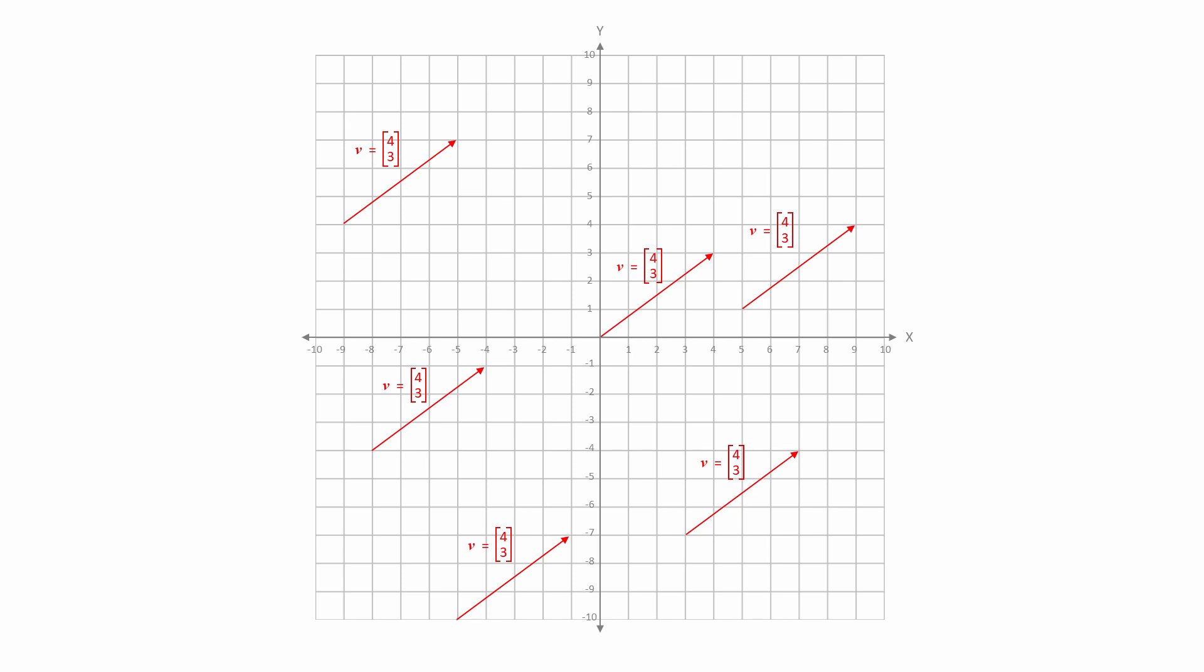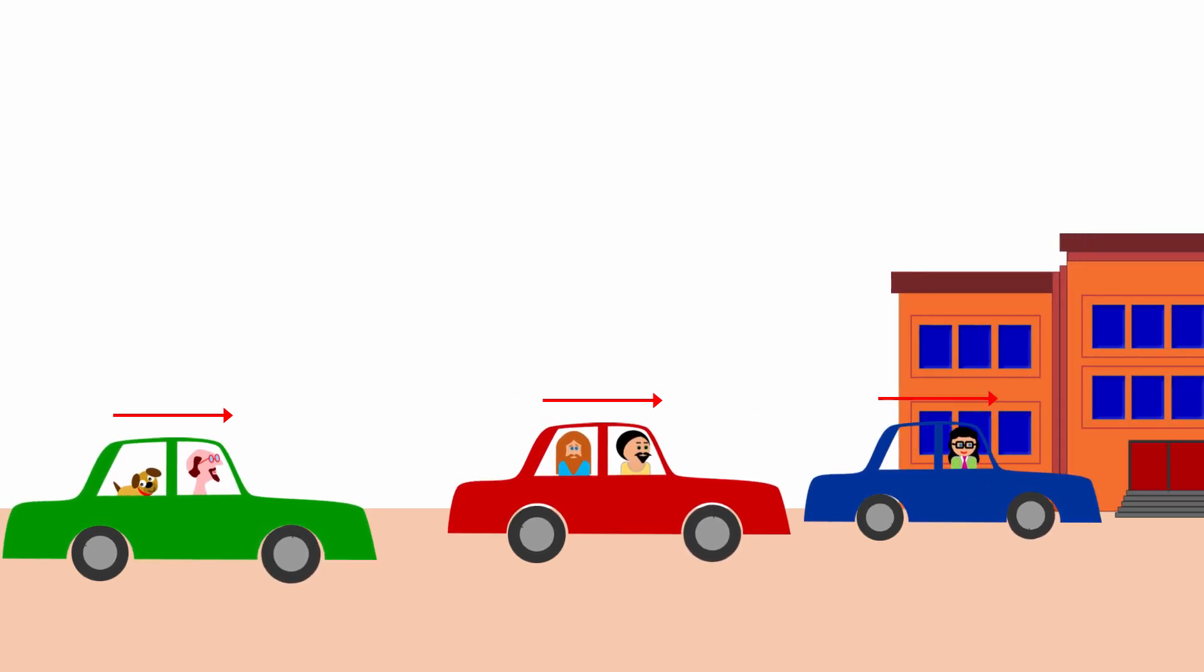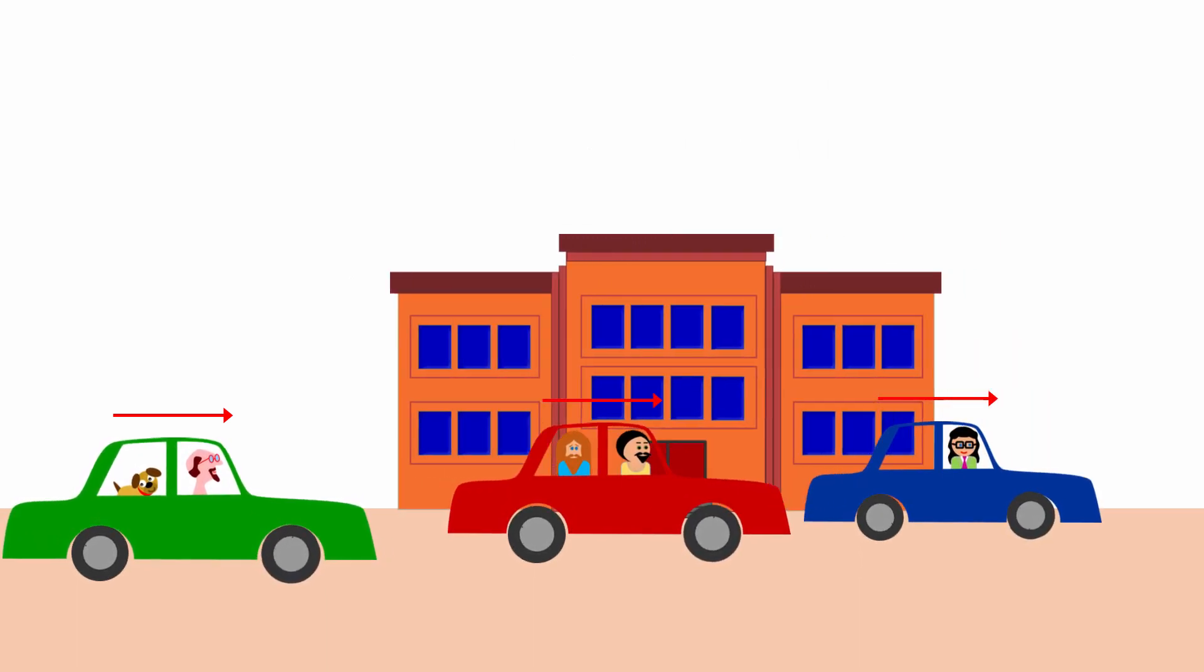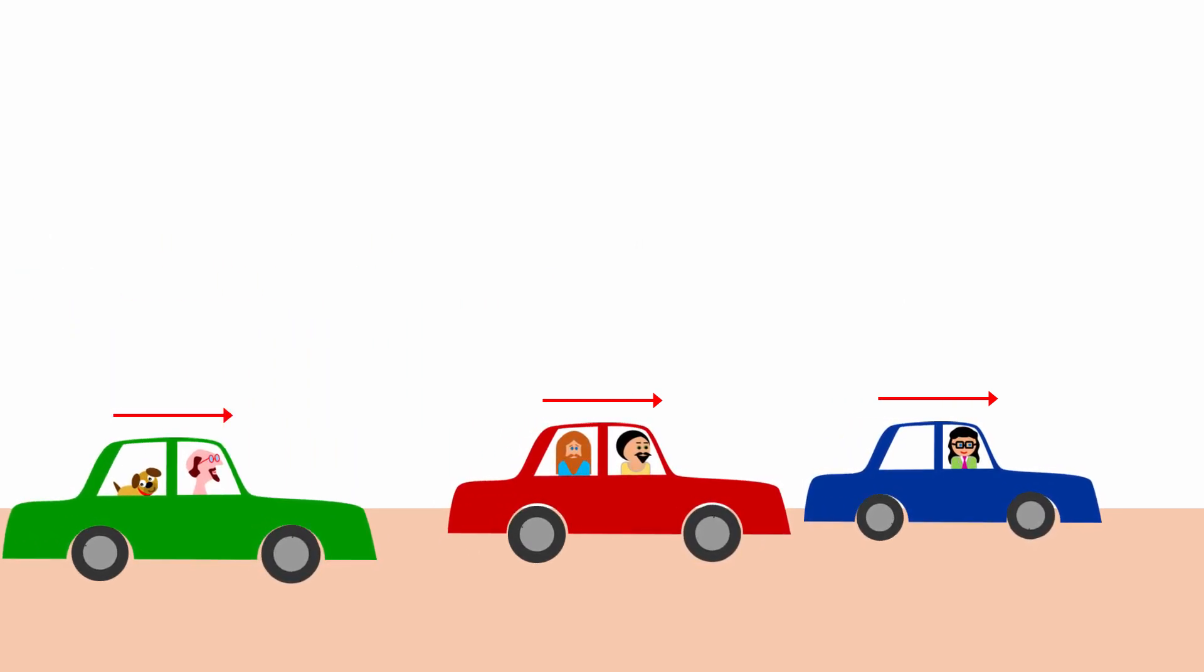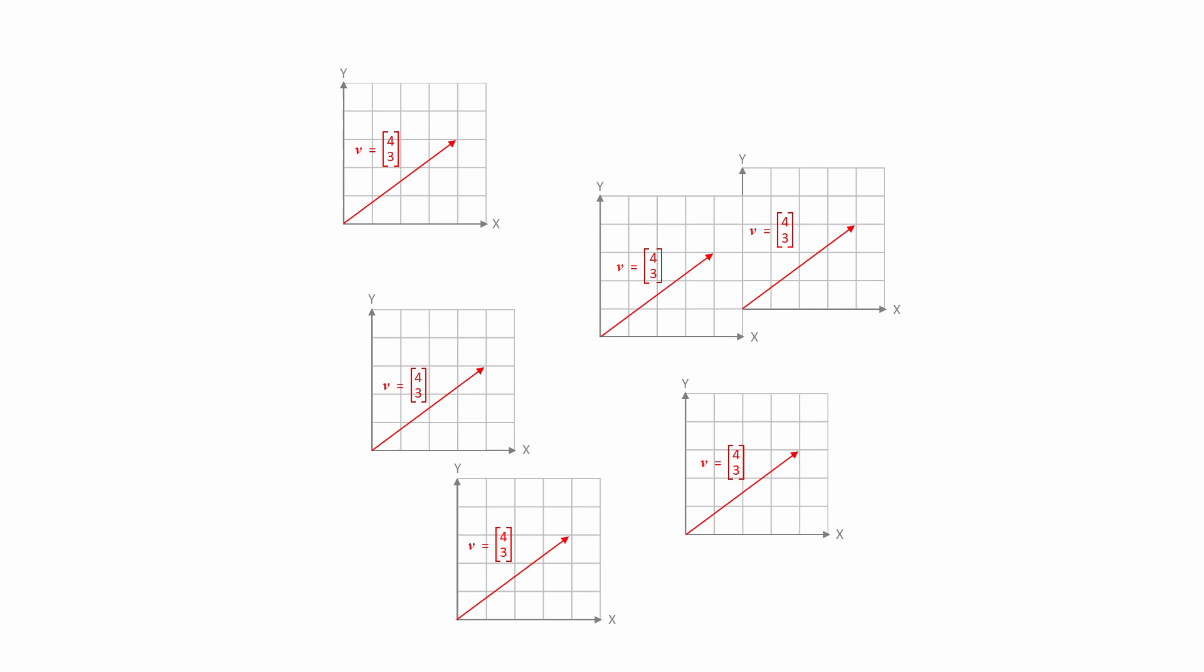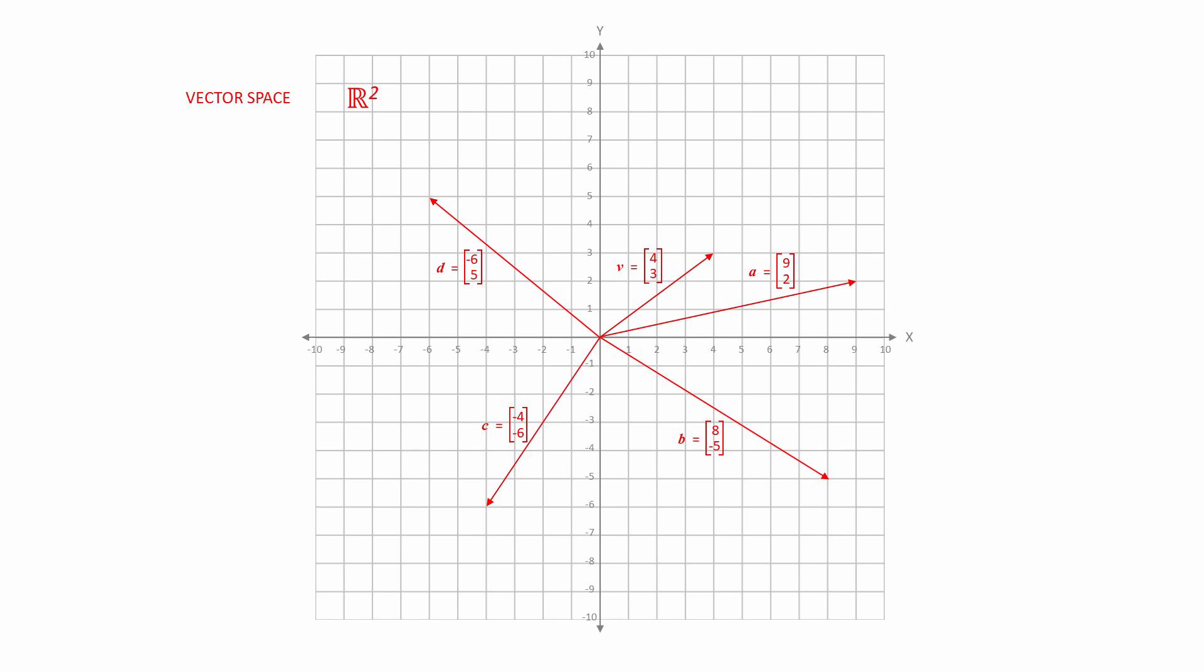When it comes to geometric vectors, the two numbers tell us only the change in X and Y from the start of the arrow, not where the start of the arrow actually is. After all, these cars are all in different places, but they're all travelling at the same velocity. You can think of each free vector as having its own coordinate system. But different vectors are easier to compare when they are rooted in the same coordinate system.